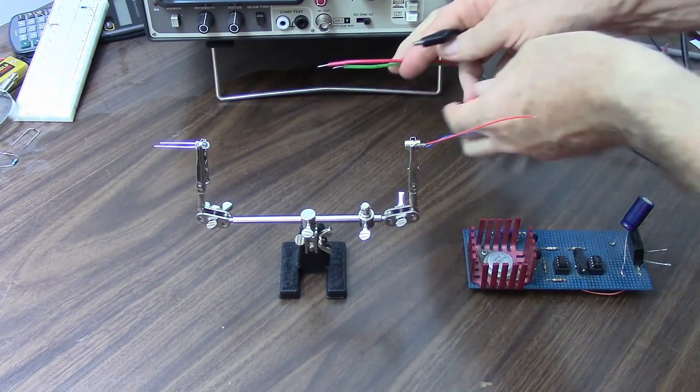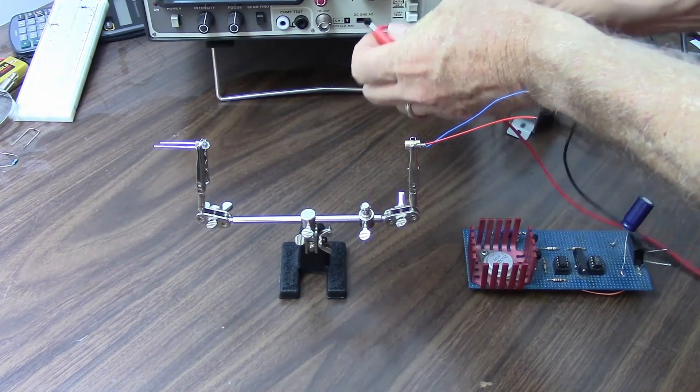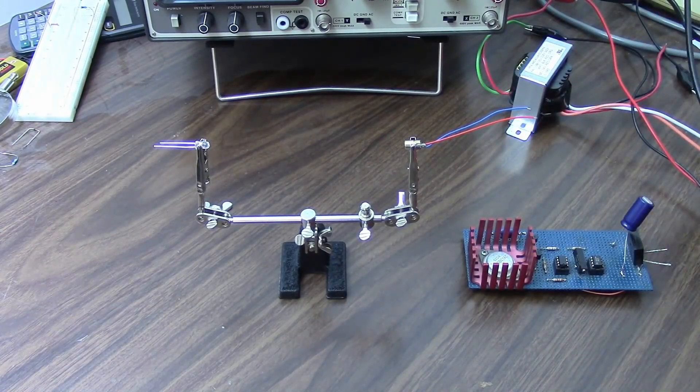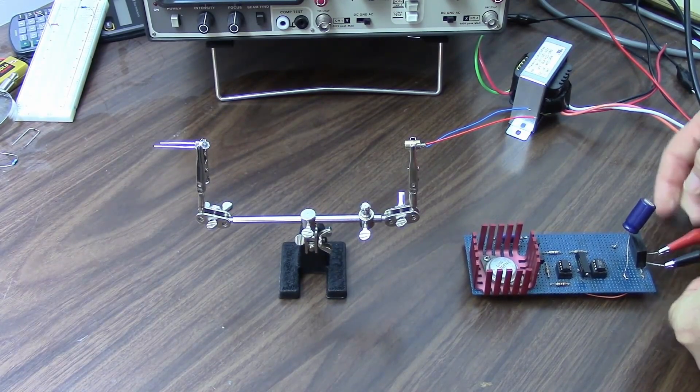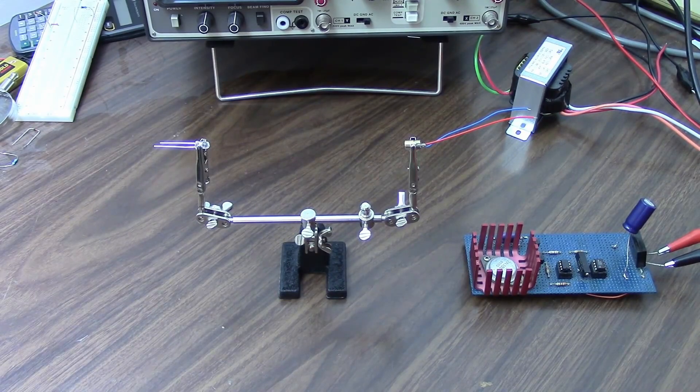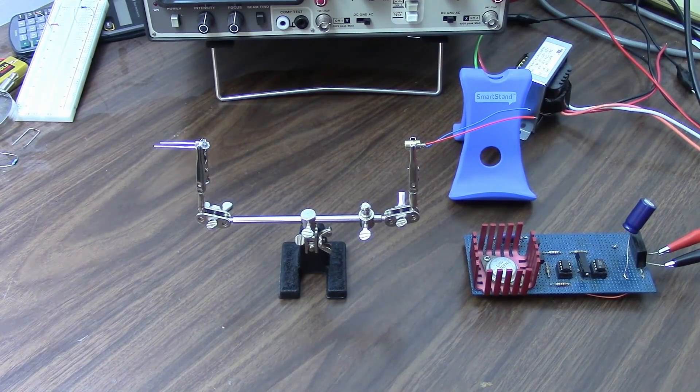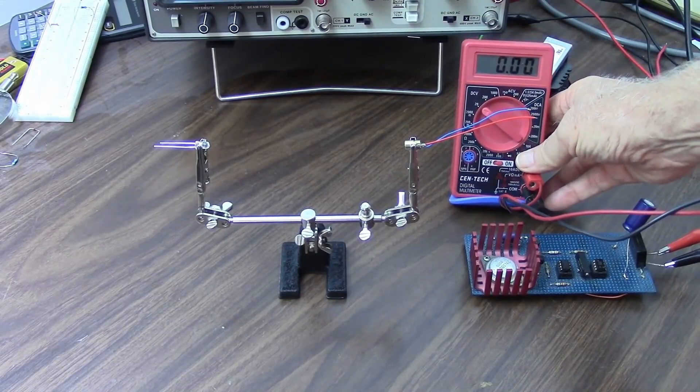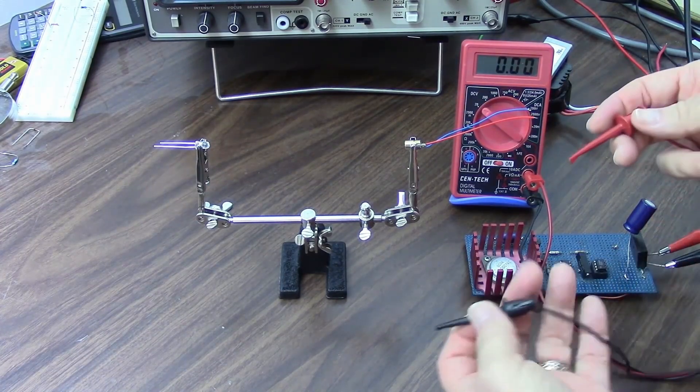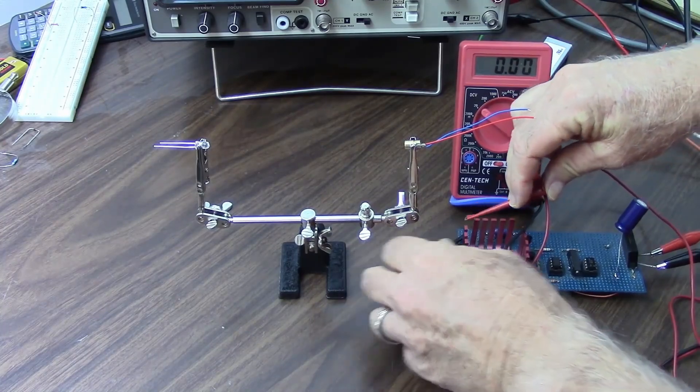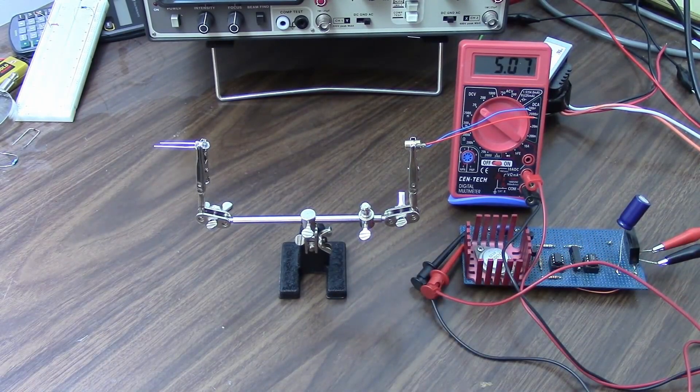Get a couple of clip leads, get these out of the way where we don't have to look at them. The other end goes here. Okay, we should have some power coming out of that power supply. Let's put up a voltmeter so we can read the voltage. The output voltage is right over here. There we go. So there's five volts out of the power supply.